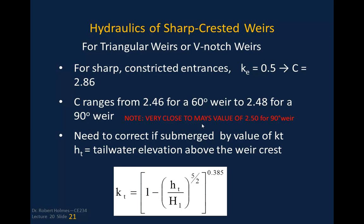If the nappe is not well-aerated and tailwater submerges it, we apply a correction factor kt based on the tailwater elevation relative to H1 (the upstream head above the weir). This kt is multiplied by the C value to correct the discharge coefficient, which then modifies Q = C·b·H^(3/2) for the triangular weir.